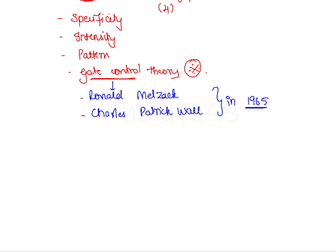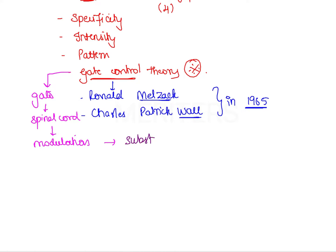This is an important MCQ point. Melzack and Wall proposed Gate Control Theory in the year 1965. They stated that there is a gate at the level of the spinal cord, and this gate is going to bring about the modulation of pain transmission. This gate is nothing but the Substantia Gelatinosa — another important MCQ point.